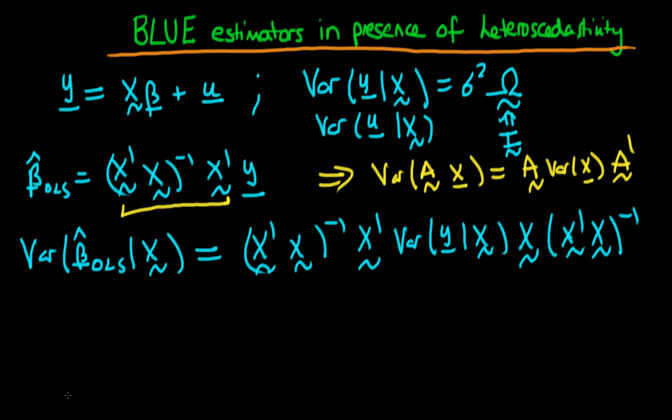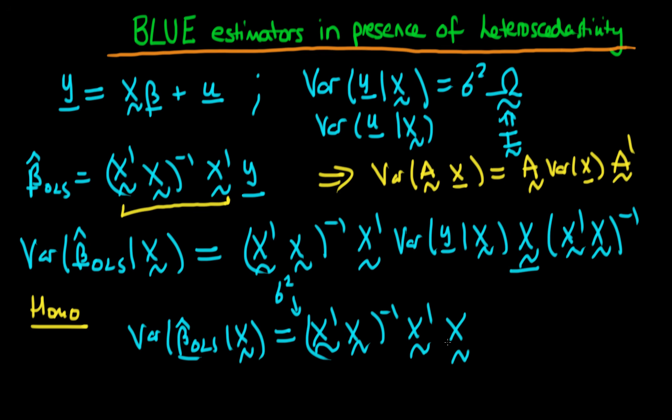So if we had homoscedasticity, we can already write out what our form of our variance is. Our variance of beta hat OLS, given that we have our matrix of our independent variables X, is just equal to X prime X to the power minus 1 times X prime. Or then it's going to be just sigma squared times I. So I'm actually going to take the sigma squared out because it's just a constant and put it at the front. And then I'm going to have operating on this matrix X here, so I'm just going to have the matrix X, and then it's going to be times X prime X to the power minus 1.